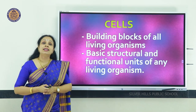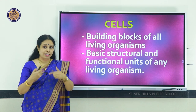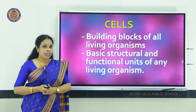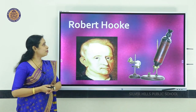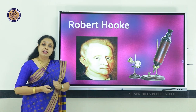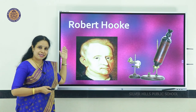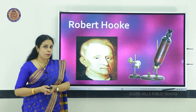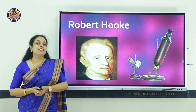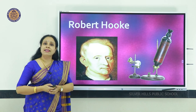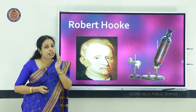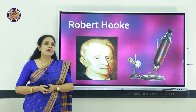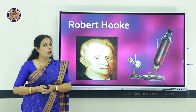Here we learn about teamwork — unless cells cooperate and coordinate, we cannot exist as a single living organism. Who first discovered cells? It was the scientist Robert Hooke in the year 1665. At that time there was no compound microscope like today; he had a very primitive microscope, and when he cut a small piece of cork and viewed it under the microscope, he saw compartments resembling a honeycomb.